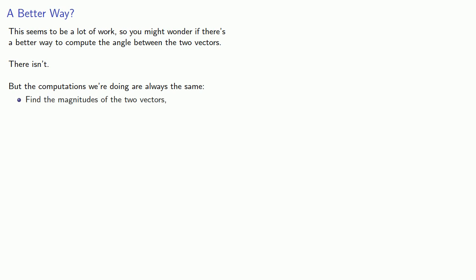We find the magnitude of the two vectors, find the magnitude of the vector joining the two, use the law of cosines, solve for cosine, and find the inverse cosine. The important thing is we're always doing the same thing.